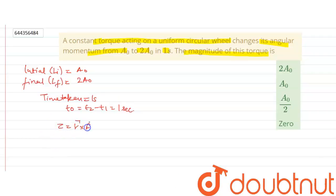And F is dp by dt, where p is linear momentum.